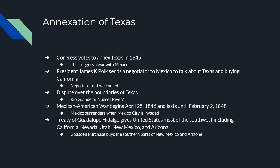Mexico did not do very well. Mexico was forced to surrender when the U.S. Marines invaded and took over Mexico City. The resulting Treaty of Guadalupe Hidalgo gave the United States most of what is today the American Southwest — California, Nevada, Utah, New Mexico, and Arizona all became part of the United States. The one remaining piece of the lower 48 states was acquired in 1859 with the Gadsden Purchase, a small southern strip of New Mexico and Arizona bought from Mexico.